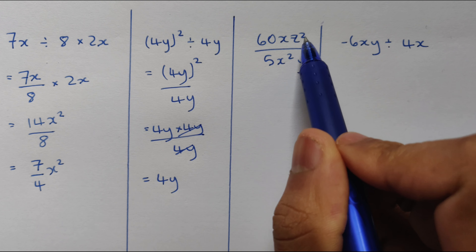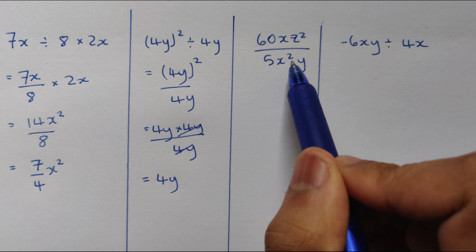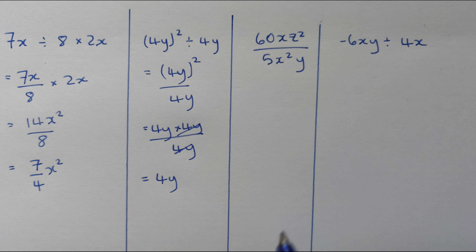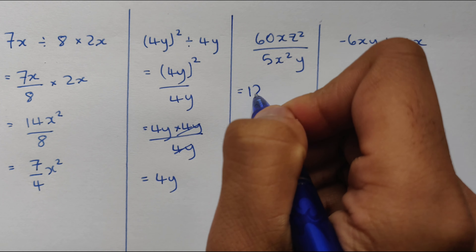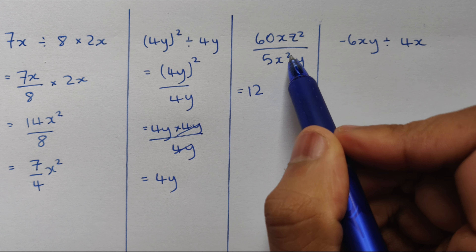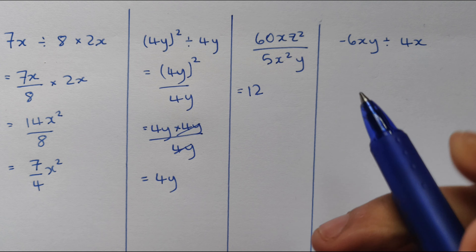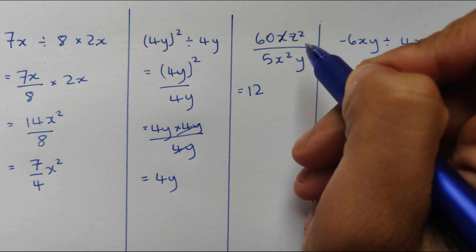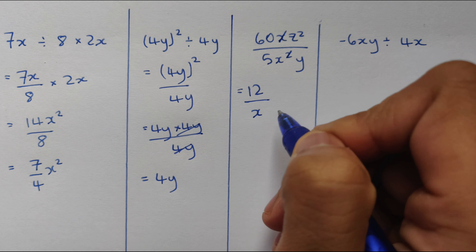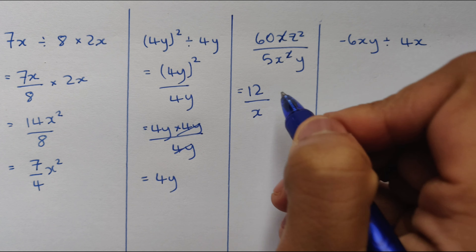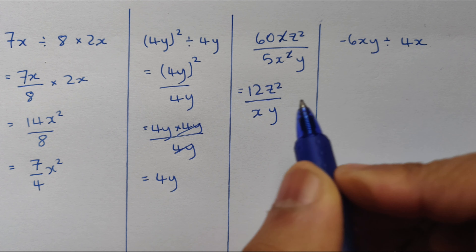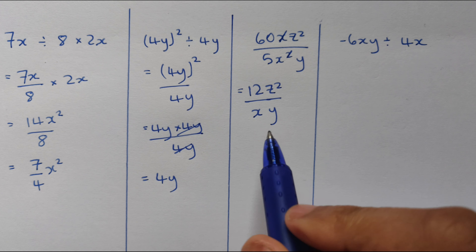Next example: 60xz squared divided by 5x squared y. So 60 divided by 5 is 12. I have x on top and x squared on the bottom, so one of the x's cancels out — I remove the squared and leave x at the bottom. Then I have z squared on top and y on the bottom. So my answer is 12z squared over xy.